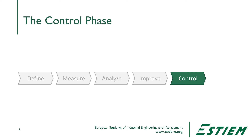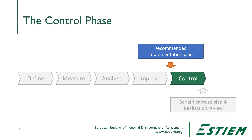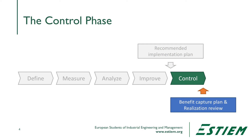The control phase is going to specify all of the work processes that will be used in the final approach to the problem that we've been able to resolve. It begins with the implementation plan and it ends with the benefit capture plan and realization review, where we actually see what benefit has been obtained from our improvement project.